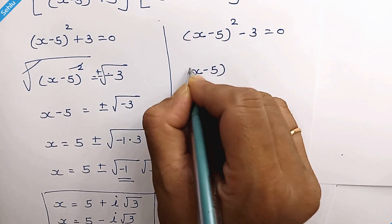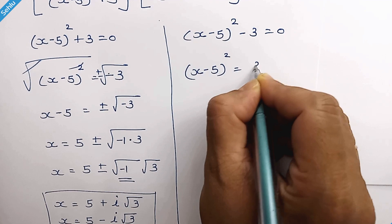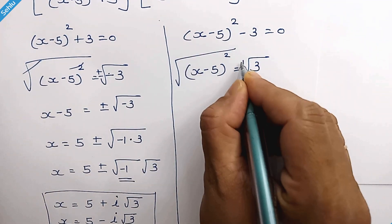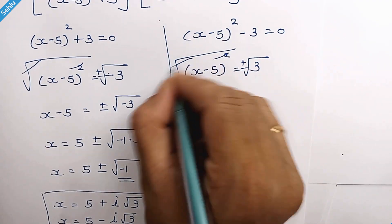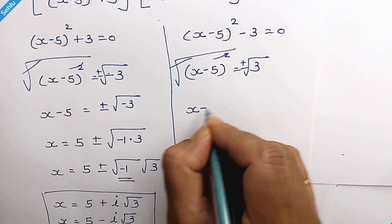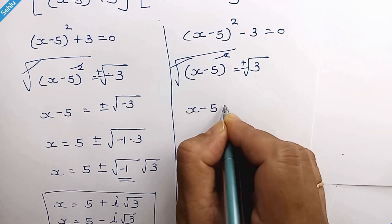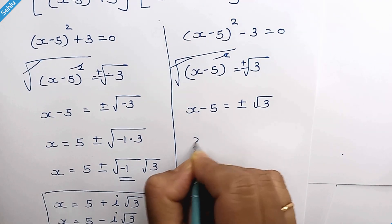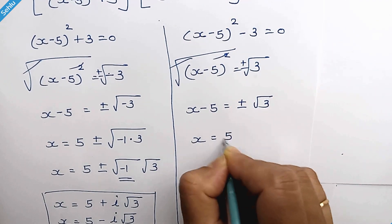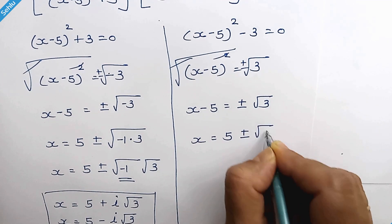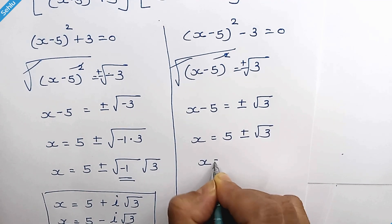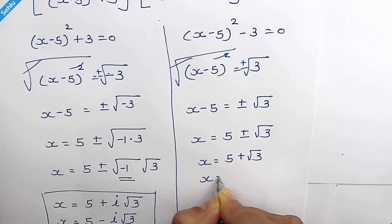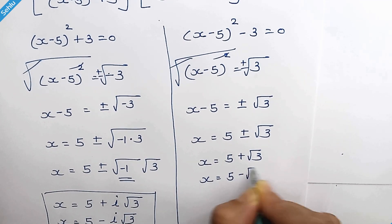For the second equation, (x minus 5) whole square equals 3. Taking square root of both sides, the square cancels, giving x minus 5 equals plus or minus square root 3. Moving 5 to the right hand side: x equals 5 plus root 3 and x equals 5 minus root 3.